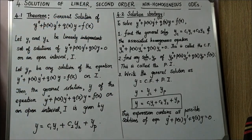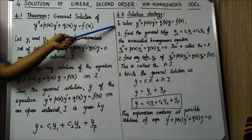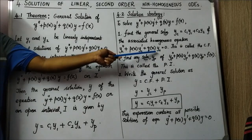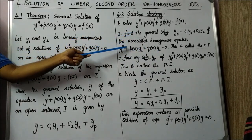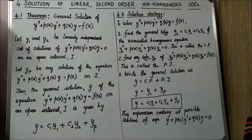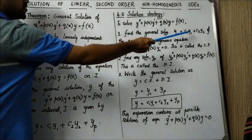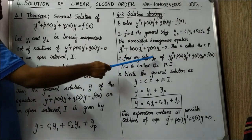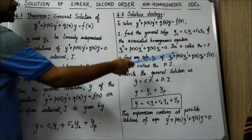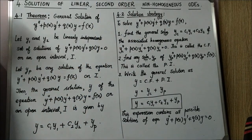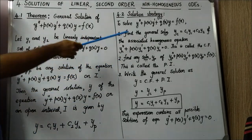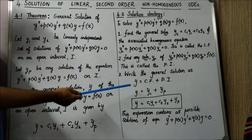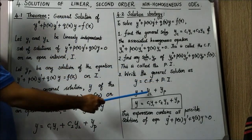The solution strategy has three steps. Step one: find the complementary function (CF), which is the general solution of the associated homogeneous equation, yc = c1·y1 + c2·y2. Step two: find any one particular solution yp — called the particular integral (PI). Step three: write the general solution as y = CF + PI, that is y = yc + yp = c1·y1 + c2·y2 + yp. This expression contains all possible solutions.